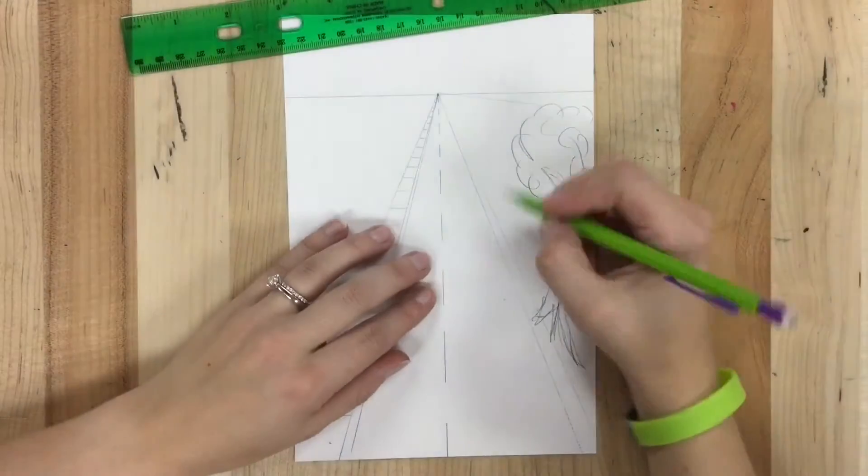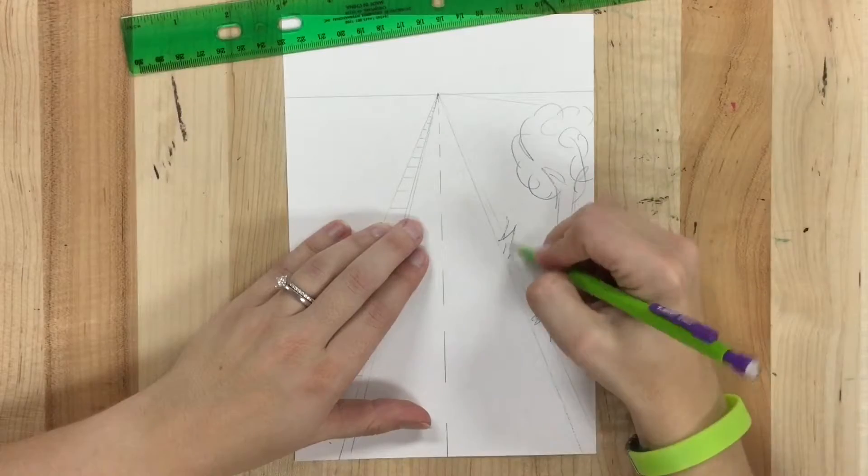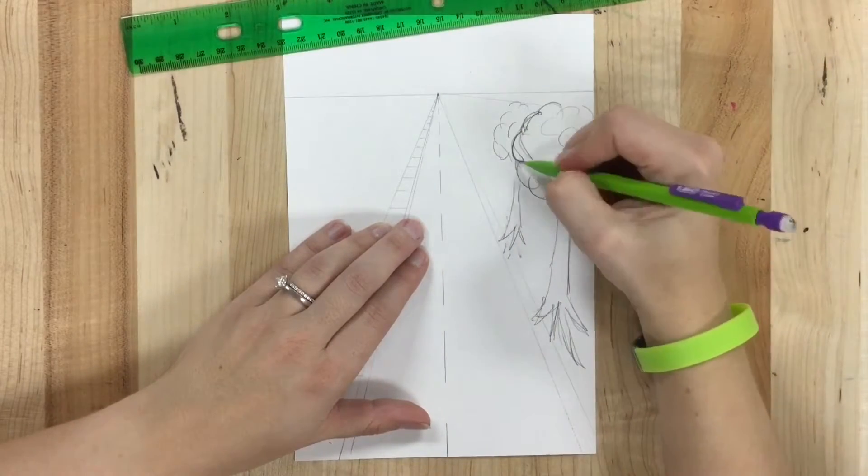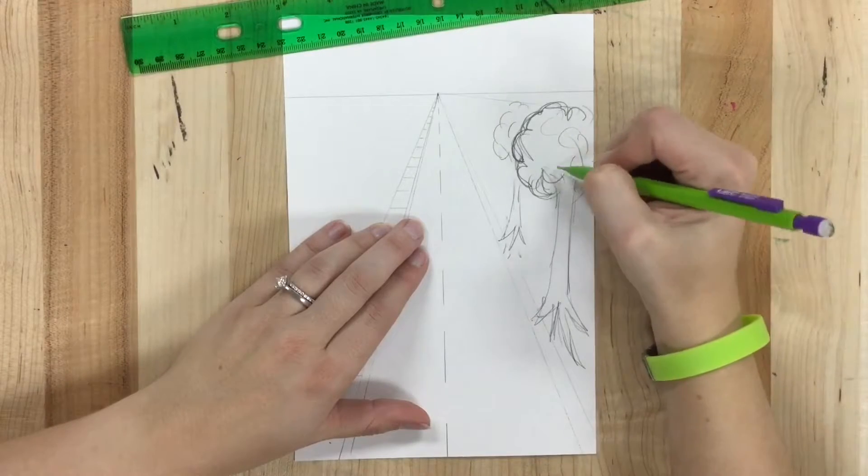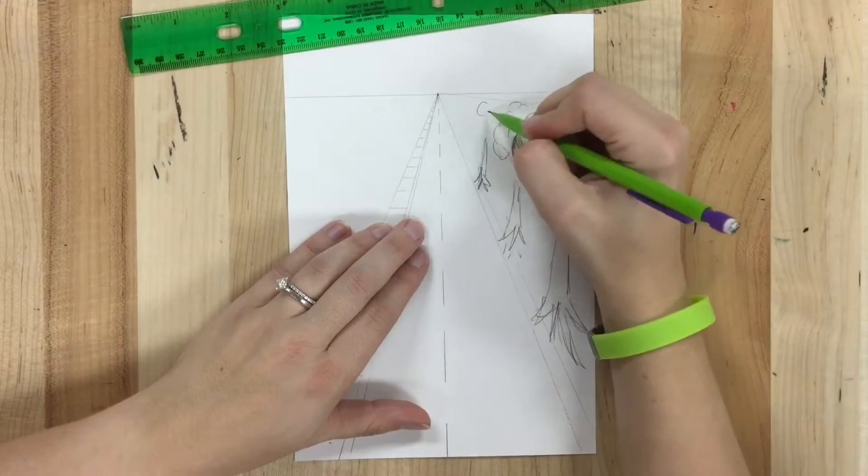Then I'm going to line up my ruler with the top of that tree and put in a second guideline. That's where the top of all the rest of the trees need to be. So I put guidelines where the bottom and the tops of the trees should be. And now I can draw in trees anywhere between those two lines that I want a tree next to my road.